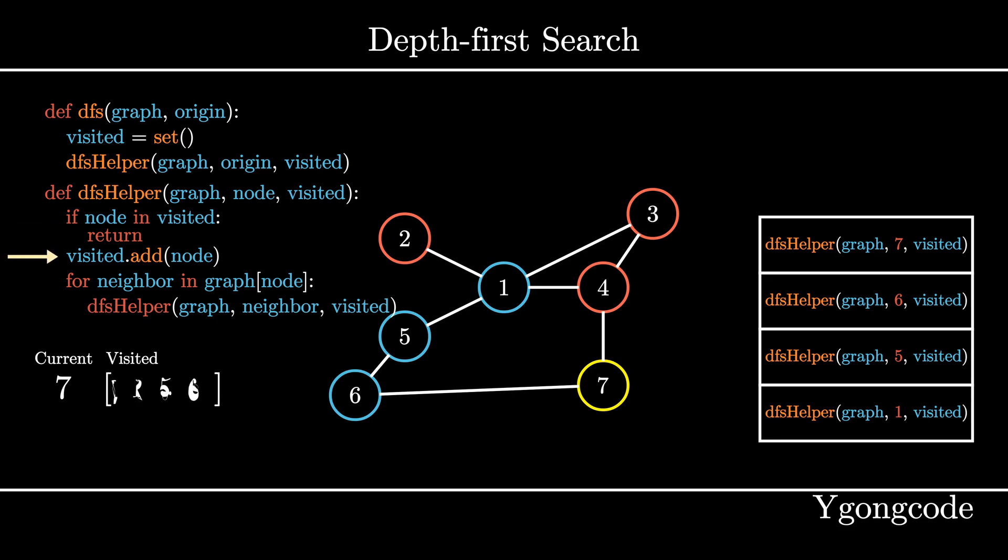At dfsHelper 7, since node 7 hasn't been visited, we add it to our visited set and pick one of its neighbors, node 6, and invoke dfsHelper on node 6.